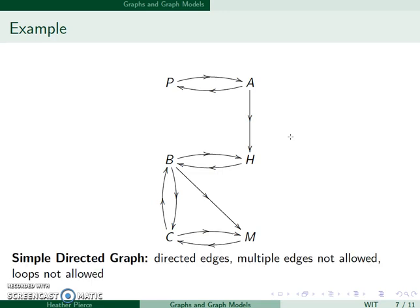This is a simple directed graph. We have directed edges. We do not allow multiple edges or loops. And when I say we do not allow multiple edges, we do still allow this, since these two edges go in opposite directions. However, we would not allow an additional arrow here moving in this direction, since that would account for two.